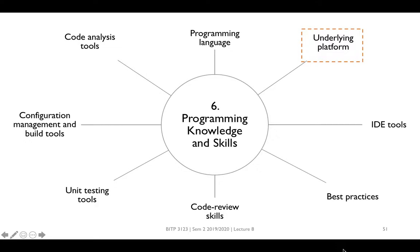Previously, we have looked at the maintainable aspect of EA. One of the maintainable aspects in programming is writing maintainable code. In each programming language, there are a set of best practices applied to write maintainable code. These include naming conventions used for variables, methods and classes, as well as the amount of spaces used, blocking and indentation to improve readability of the code.